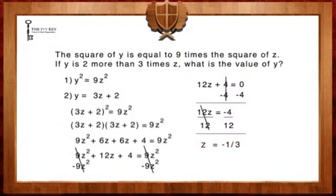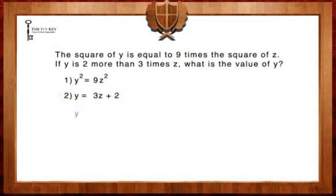The question asks us, what is the value of y? We can find this by substituting negative 1 third for z back into our second equation. The equation now reads, y equals 3 times negative 1 third plus 2.